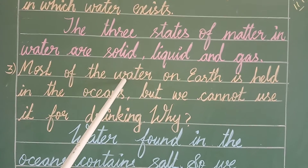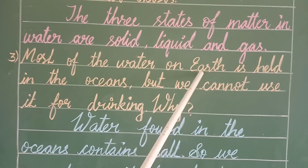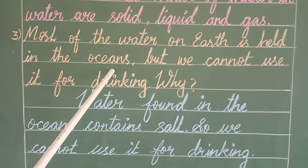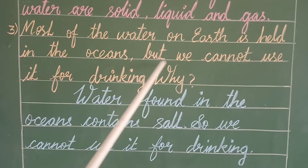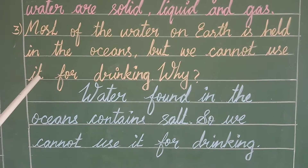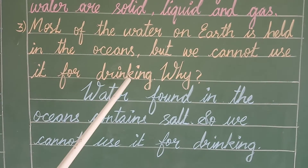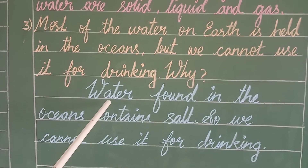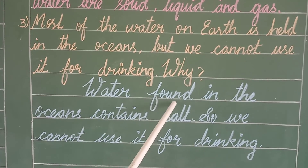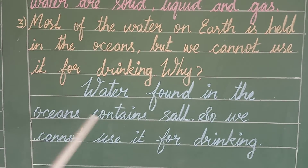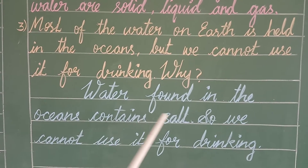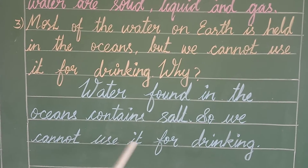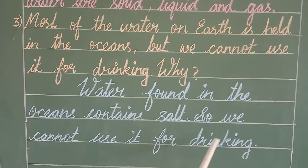Third question: most of the water on earth is held in the oceans but we cannot use it for drinking. Why? The answer is water found in the oceans contains salt, so we cannot use it for drinking.